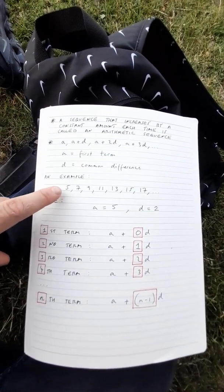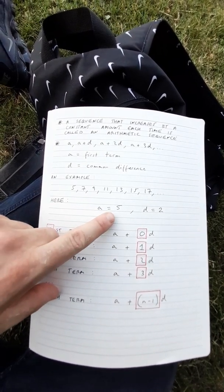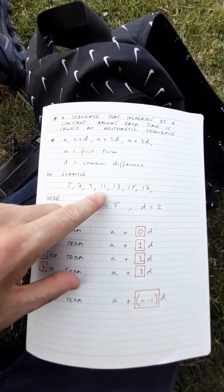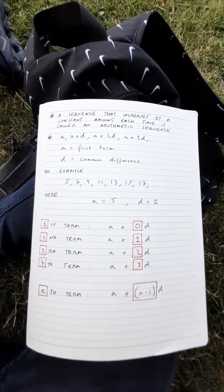Over here we can see that the first term is 5 and we call this a, and the common difference is 2, and we call the common difference d.